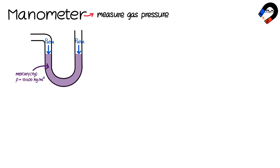When gas is input into the left-hand side tube, the gas pressure pushes downward on the mercury level on the left-hand side,